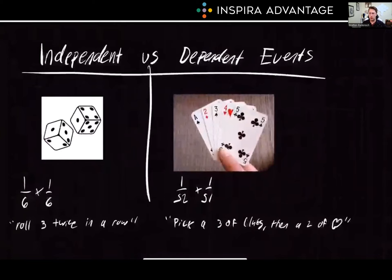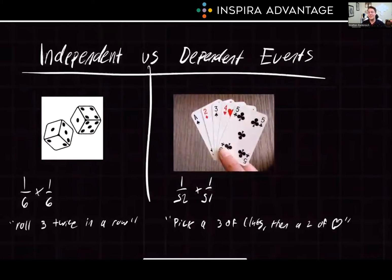Let's start with a core concept here: probability. Imagine rolling a dice — the outcome of one roll doesn't impact the outcome of the next. These are called independent events. But let's say that you're drawing cards from a deck without replacing them. Well, the probability of drawing a certain card changes after each draw. These are known as dependent events.